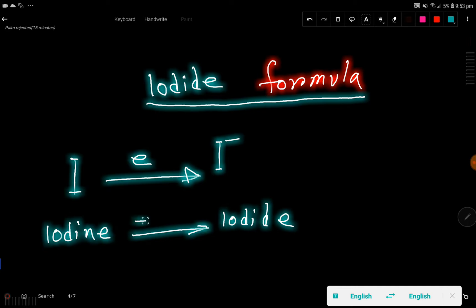Deduct '-ine' and you have to add '-ide'. So you are getting here iodide, right? From iodine you are getting iodide.